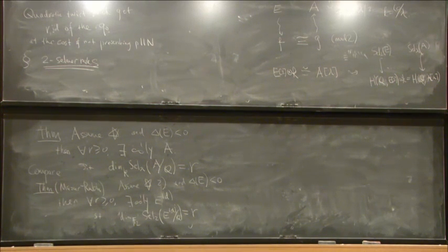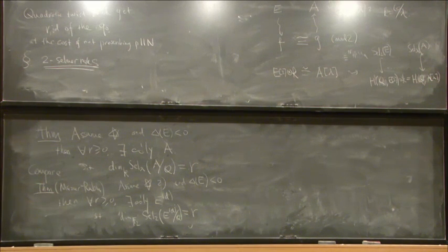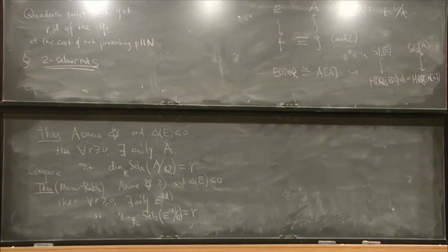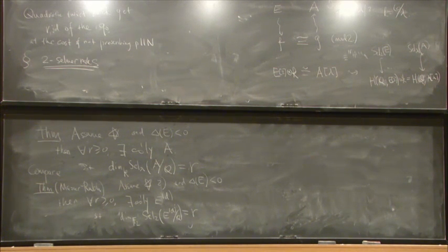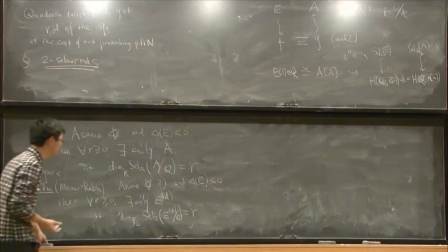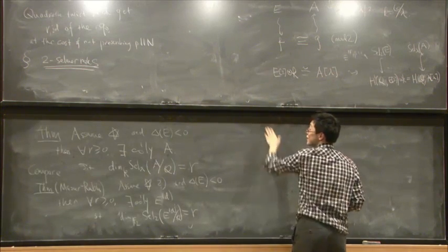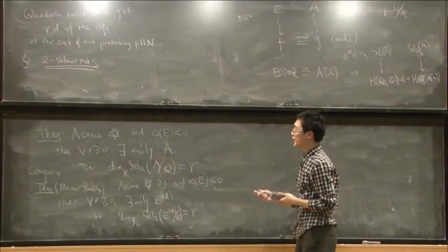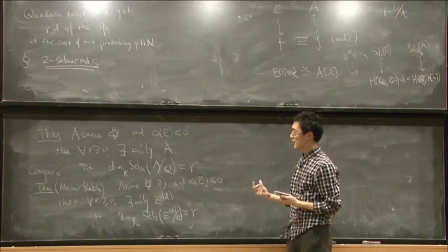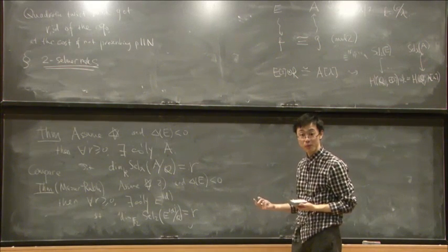An important distinction: when doing a quadratic twist one introduces additive places, but when doing the level-raising process one never introduces additive places. So if one starts with an elliptic curve with semistable reduction, one ends with a semistable abelian variety. The theorem says the Selmer rank can get arbitrarily large or arbitrarily small — in particular it can drop to zero.